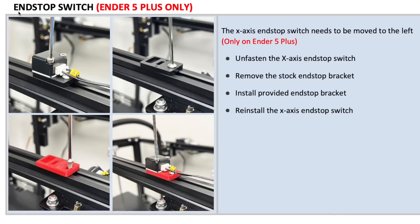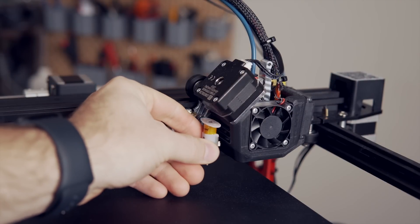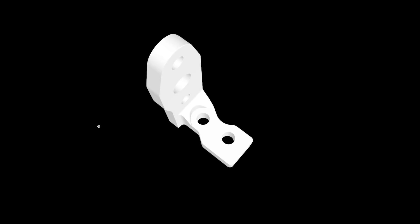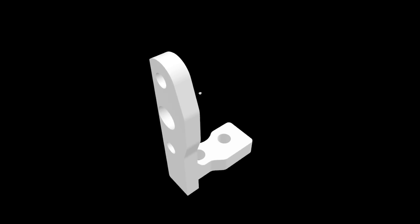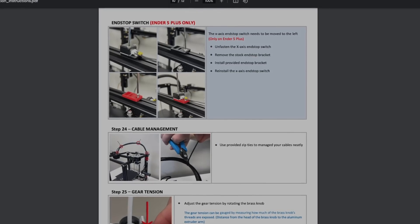You will need to move the x-axis end stop to the left and to attach the BL touch to the NG body. Printed parts for this are now included with every purchase and I will have links in the description over to the official documentation for additional reference.